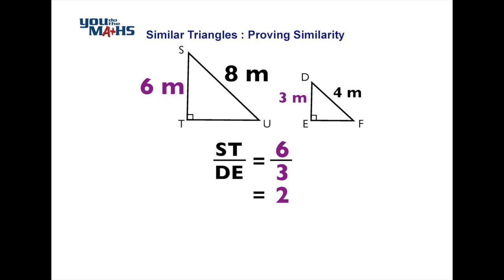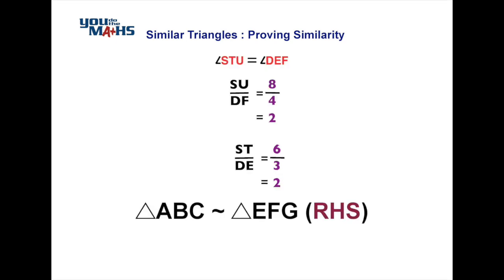To summarize, we write down a list comparing our two right angles, then the ratio of the hypotenuses — large over small — and then another pair of matching sides, also large over small. Both pairs of sides are in the same ratio, so we conclude the two triangles are similar, using the squiggly line notation, and the similarity condition is right-hypotenuse-side.